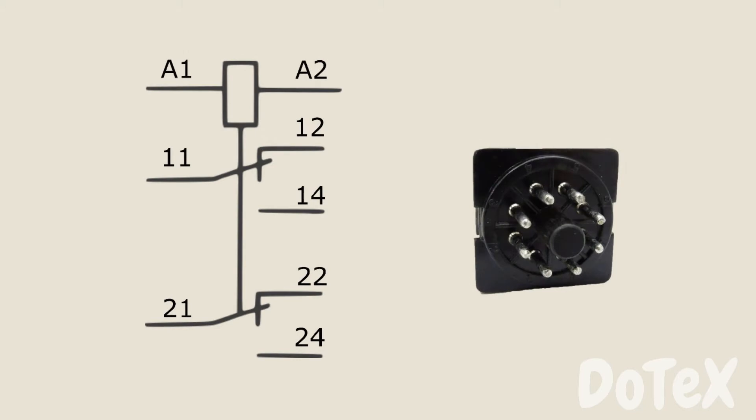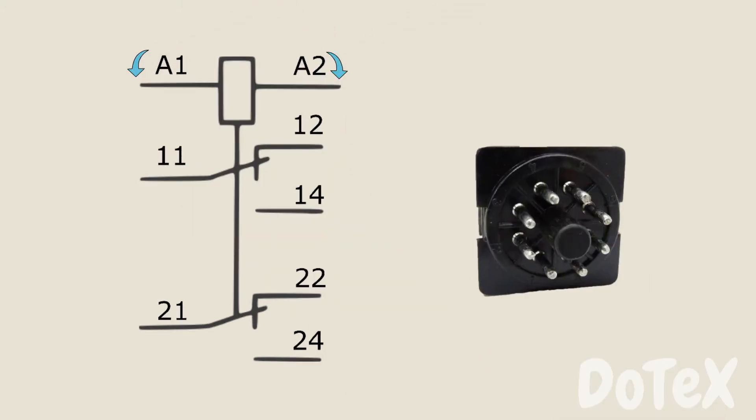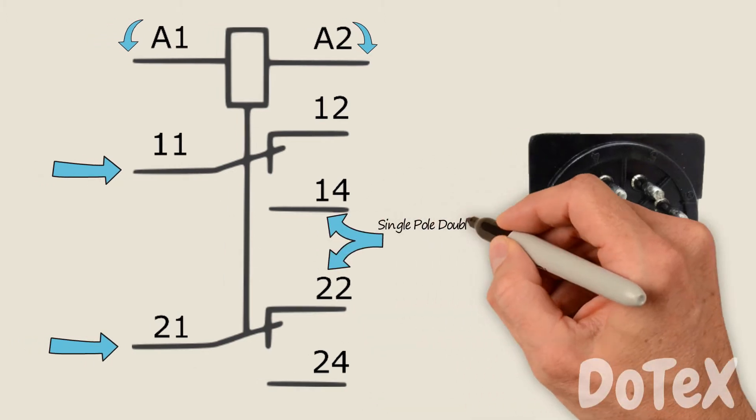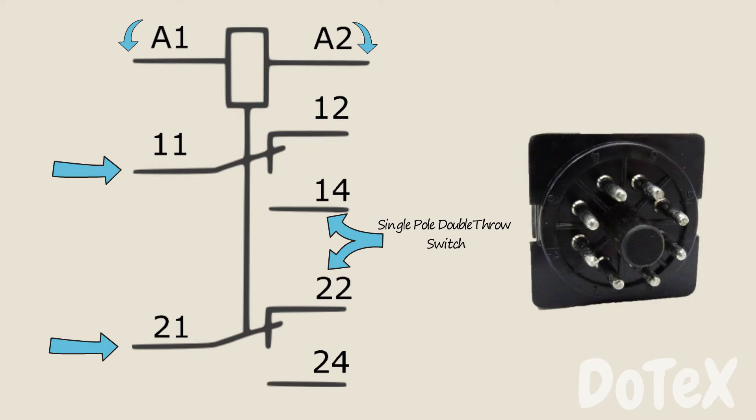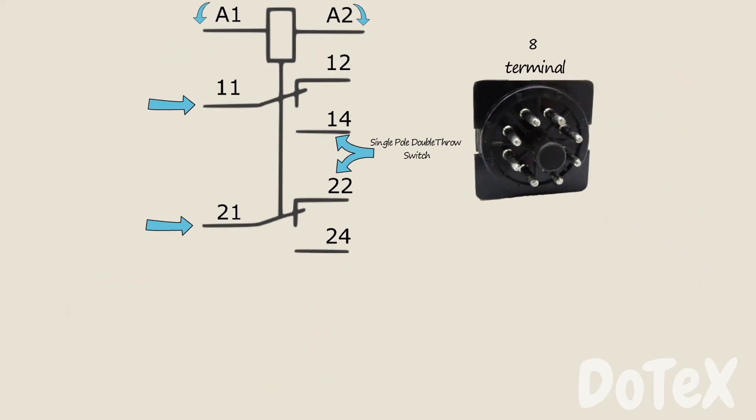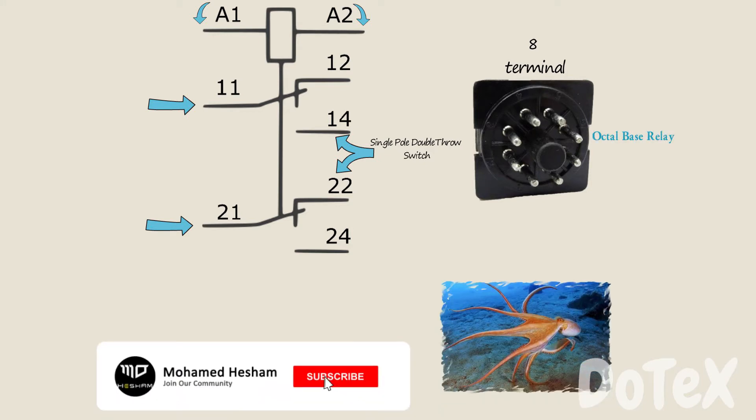If a plug-in ice cube relay has two coil terminals and two blocks of three terminals, and each block is also called single pole double throw switch, this means it has a total of eight terminals. Users sometimes call it octal-base relay, since it's like an octopus.